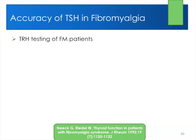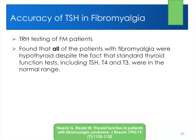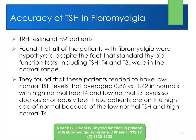In a study in the Journal of Rheumatology, they looked at fibromyalgia patients and did TRH testing. TRH testing used to be done more routinely, but now they say you don't need it because you have a highly sensitive TSH — which is not accurate. TRH, thyroid-releasing hormone testing, tells you a much better picture of who has hypothyroidism. In this study, all fibromyalgia patients were found to be low thyroid even though they had normal blood tests. The fibromyalgia patients had a TSH averaging 0.86 versus normals at 1.42, with high normal T4 and low normal T3 — a classic picture that we typically dismiss as fine.